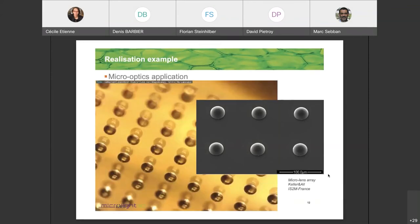Micro optics is quite a very key application for us. The big point here is that thanks to the fact that we can overlap the voxel, we can print with a very smooth surface, which is key for an optical application.